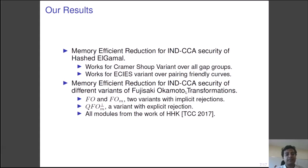We then extend this result to the Fujisaki-Okamoto transformations. Specifically, we consider the modular analysis from the work of Hofheinz, Hövelmanns and Kiltz from TCC 2017, and we show memory tight reduction for two variants with implicit rejections, namely FO and FOM. In addition, we could show a memory tight reduction for a variant with explicit rejection as well. The variant was named QFOM part by HHK.